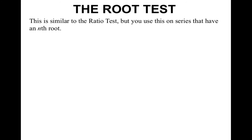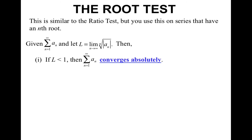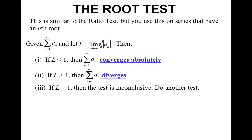Now we have the root test. This is similar to the ratio test, but you use it on series that have an nth power. It says: if you're given some series and you let the limit as n approaches infinity of the nth root of the absolute value of the sequence equal L, then if L is less than 1, the series converges absolutely. If L is greater than 1, the series diverges. And if L equals 1, the test is inconclusive and you must do another test.